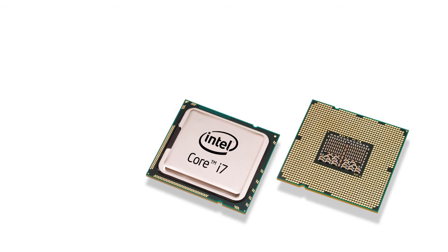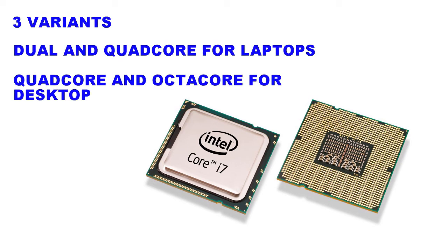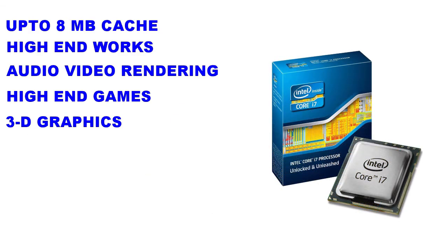i7 processors have 3 variants — 2 for laptops and 1 for desktops. For laptops there are dual core and quad core processors; for desktops there are quad core and octa core processors. Hyperthreading is enabled in i7 processors, and they have better cache memory, up to 8 megabytes. i7 processors can be used for very high-end work like audio/video rendering, high-end games, and 3D graphics.